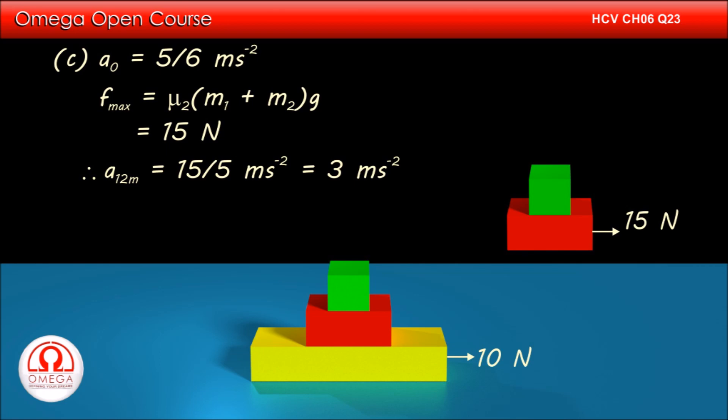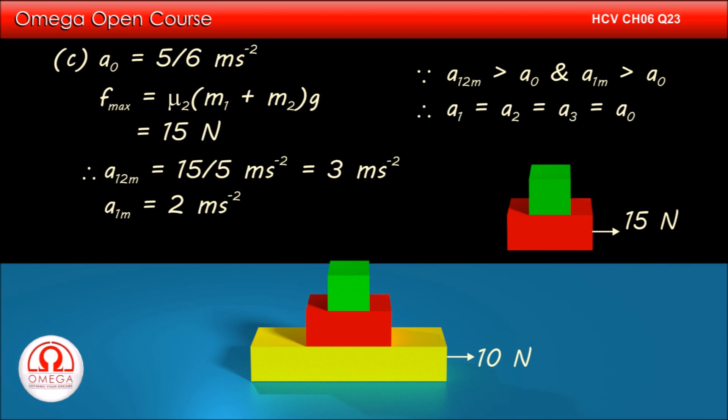Also, the maximum possible acceleration of the topmost block is 2 meters per second square. Since all these values are more than the common acceleration of the combined system, all the blocks move together and their acceleration is 5 by 6 meters per second square. This is the answer to part C of the question.